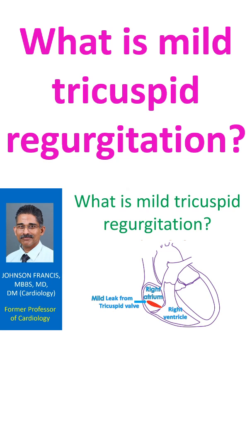Tricuspid regurgitation is a leak in the valve between the right ventricle and right atrium. The right atrium is the upper chamber from which the right ventricle receives blood when it relaxes after contraction.